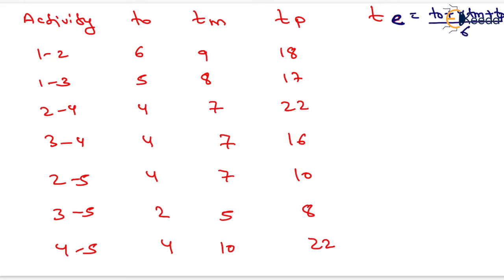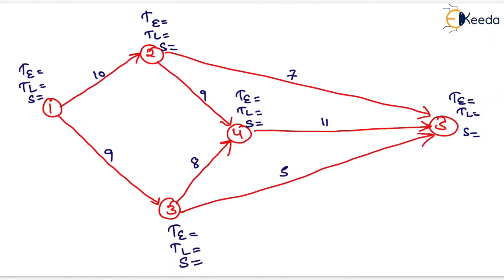After putting in the values: for activity 1-2, Te equals 10; for 1-3 it equals 9; for 2-4 it equals 9; for 3-4 it equals 8; for 2-5 it equals 7; for 3-5 it equals 5; and for 4-5 it equals 11. Now we will mark all the activity times above the activities.